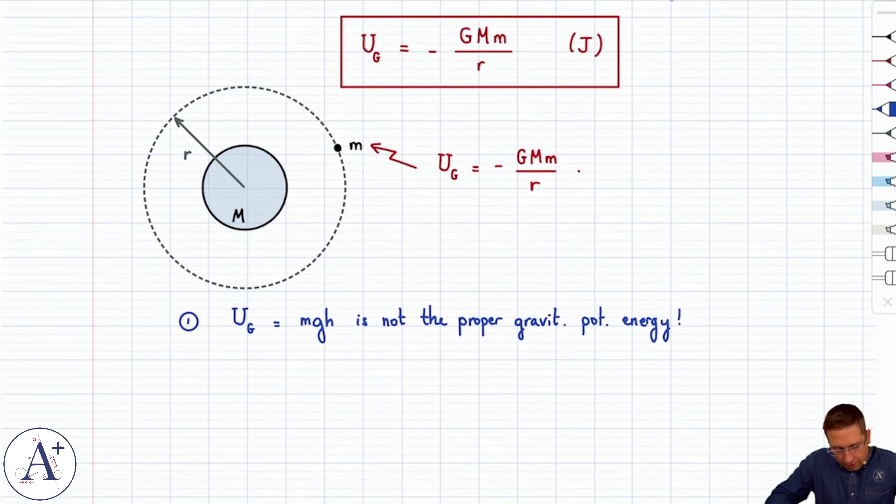And then another thing, and we're really not used to that, we're used to being able to set U sub g equals zero wherever we want. Here, because of the expression of U sub g, we only have one option. And that is that this thing can only be zero when r goes to infinity.